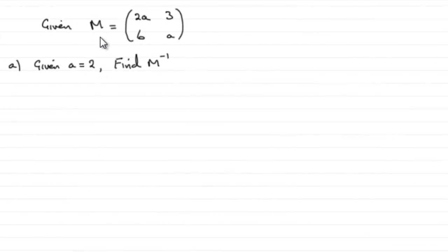Now in this question we're given that the matrix M equals 2A, 3, 6, and A. And we're also given that if A equals 2, we've got to find the inverse matrix of M.